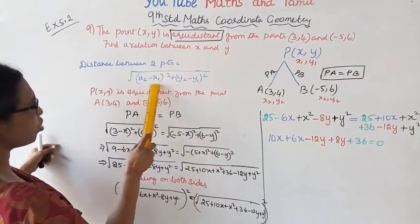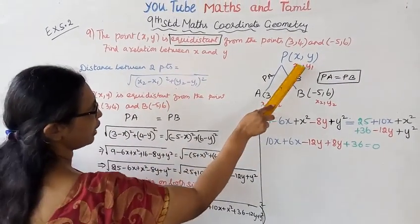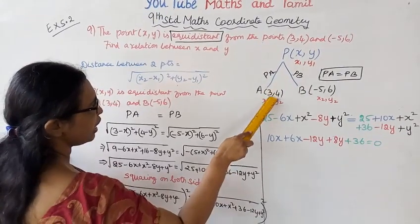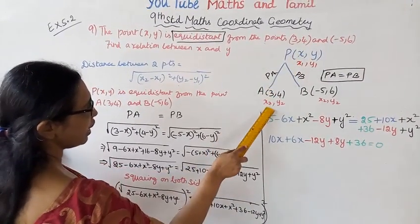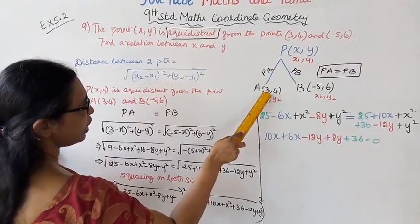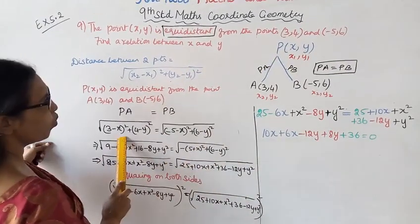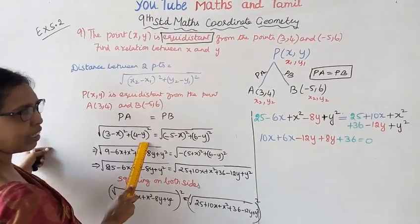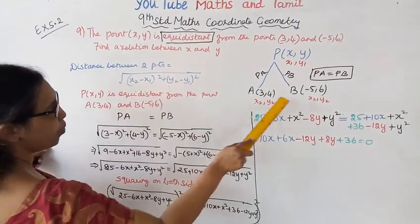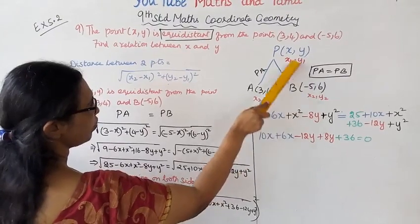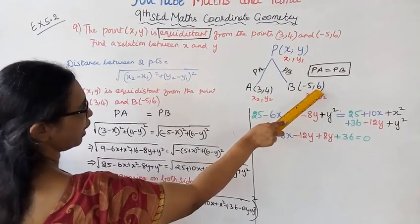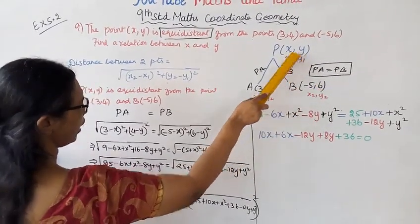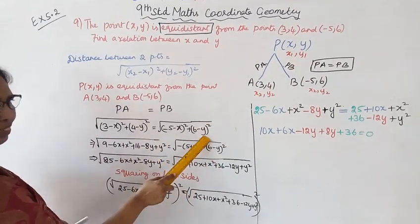The formula is x2 minus x1: (3 - x)² plus (4 - y)². PA. PB: (-5 - x)² plus (6 - y)².